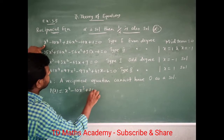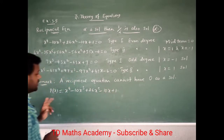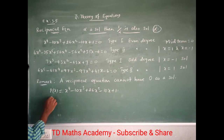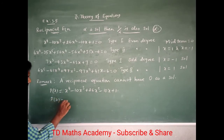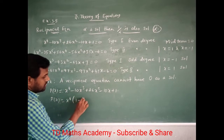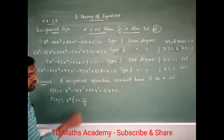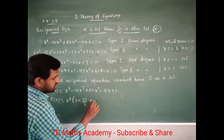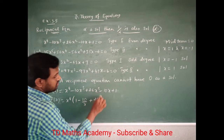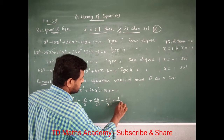Consider the polynomial: x power 4 minus 10x cubed plus 26x squared minus 10x plus 1. The polynomial is ready. We can take out x power 4, so p of x equals x power 4 into: 1 minus 10 by x, plus 26 by x squared, minus 10 by x cubed, plus 1 by x power 4.